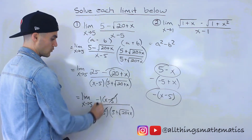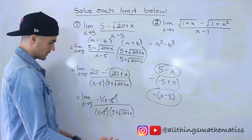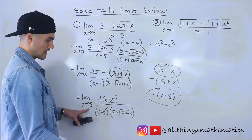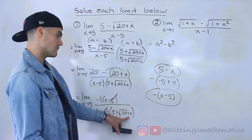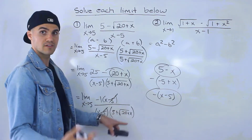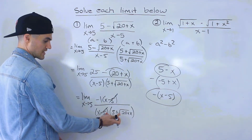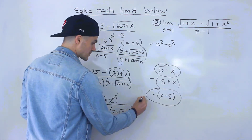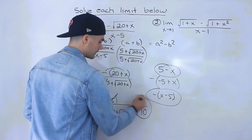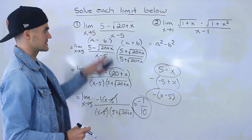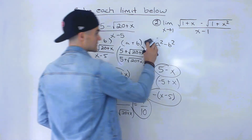Now those (x minus 5) terms cancel out, so we're just left with a negative 1 on top. Now we can substitute x equals 5: we get 20 plus 5, which is 25, the square root of 25 is 5, and 5 plus 5 gives us 10. So our final answer is negative 1 over 10. That's the limit for number 1.